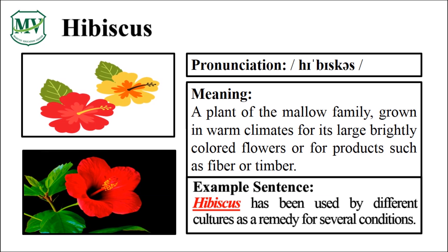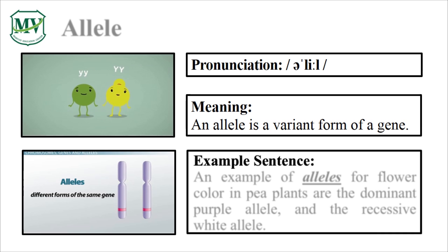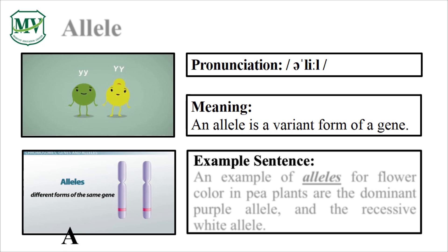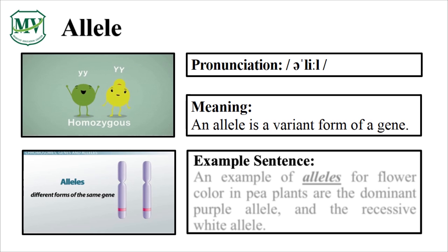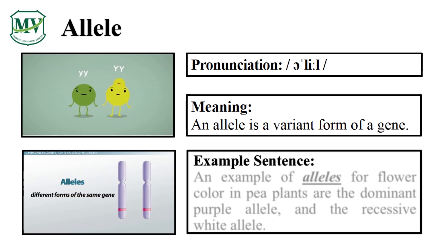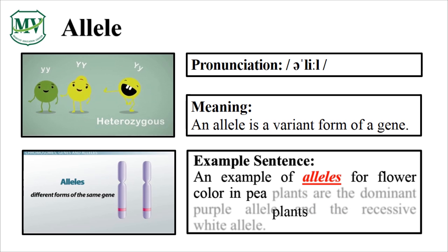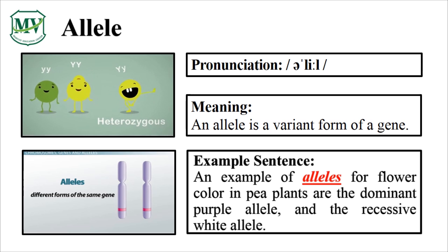Wonderful! Let's learn another one. Please say the word with me. Allele. Let's say it again — allele. A-L-L-E-L-E. Allele. That was very good! Can you say the word by yourself? Allele. Well done! An example of alleles for flower color in pea plants are the dominant purple allele and the recessive white allele. Can you read the sentence on your own?